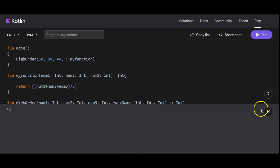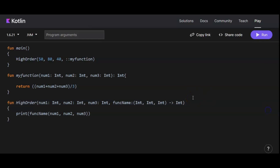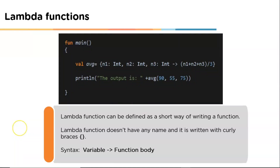This is a higher order function. Now let's understand lambda functions. A lambda is an abbreviated form of function writing. The lambda function is written without a name and is enclosed in curly brackets. The basic syntax is: variables or arguments are on the left-hand side of the arrow operator, and the body of the function is on the right-hand side. In the example, 'avg' is the lambda variable, n1, n2, n3 are the parameters on the left side, and the average calculation is the function body on the right side.